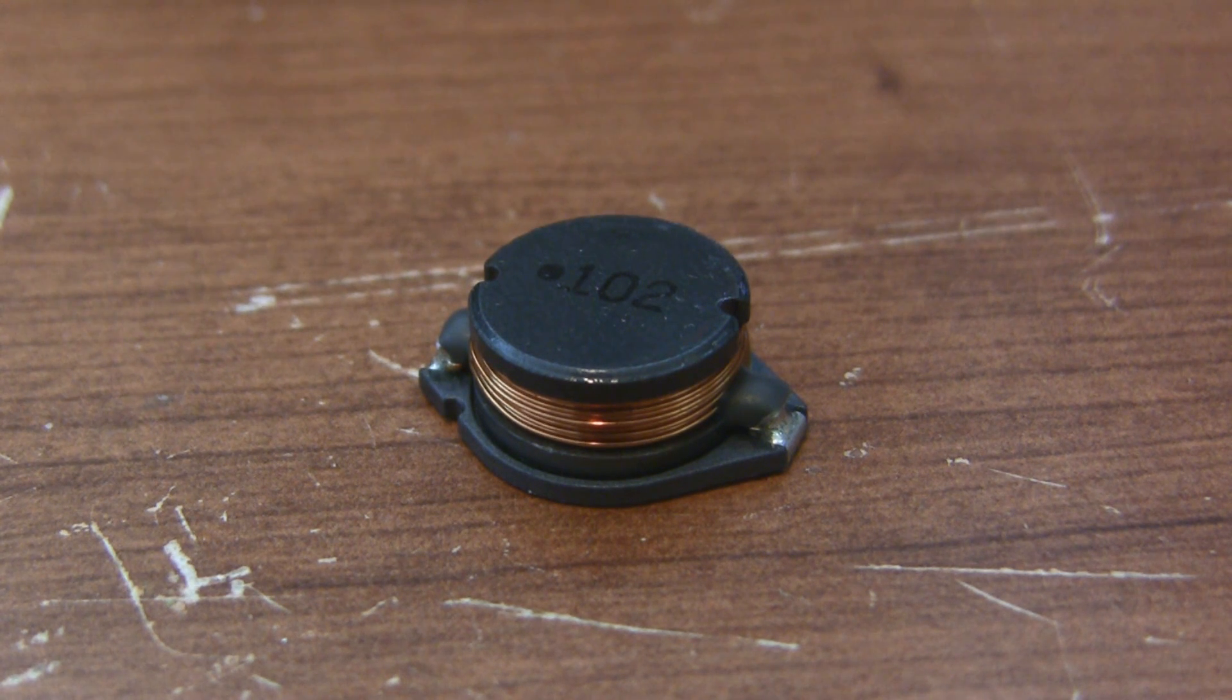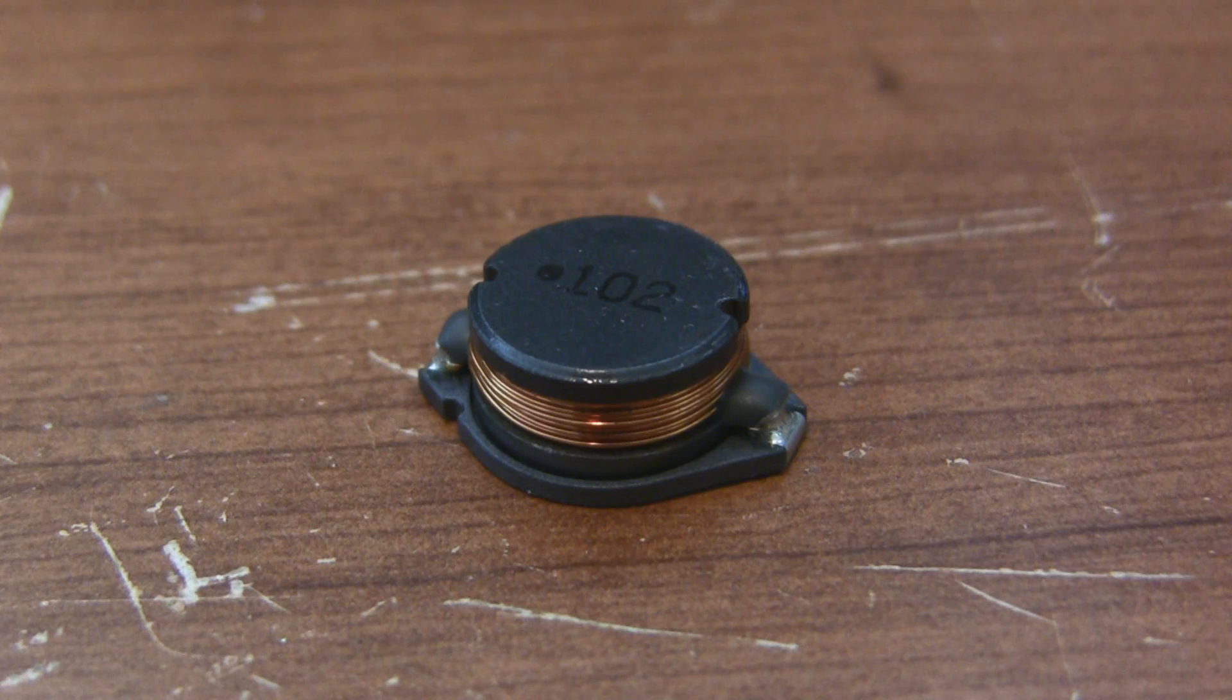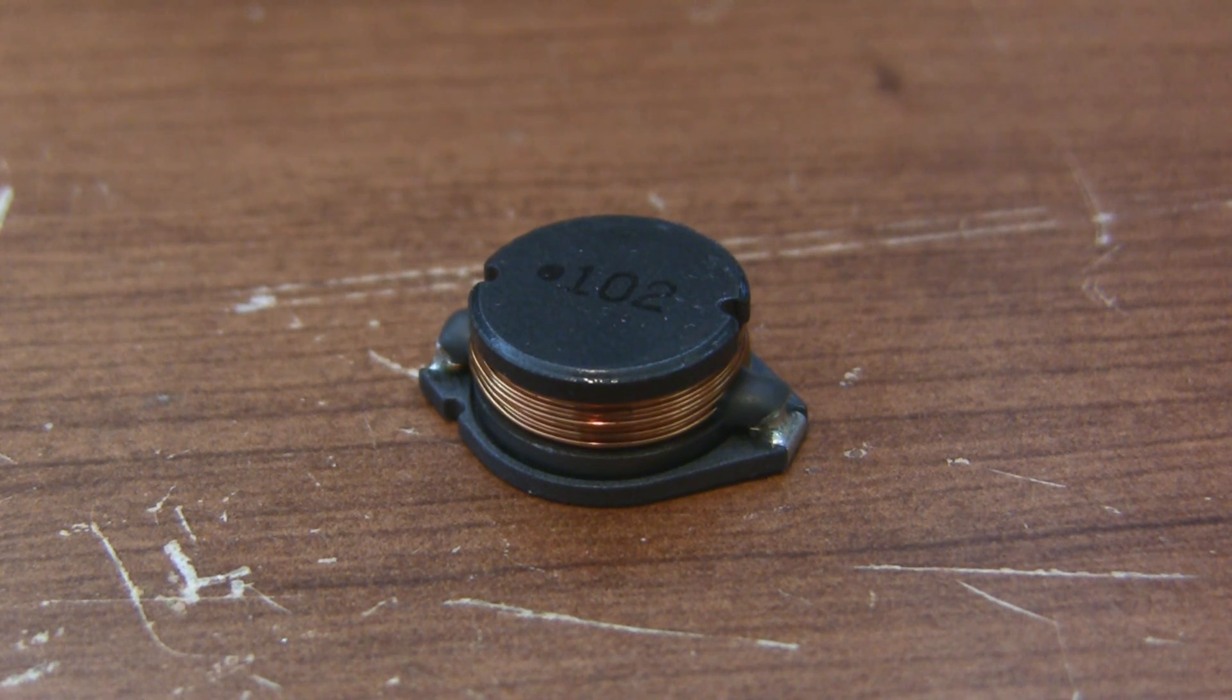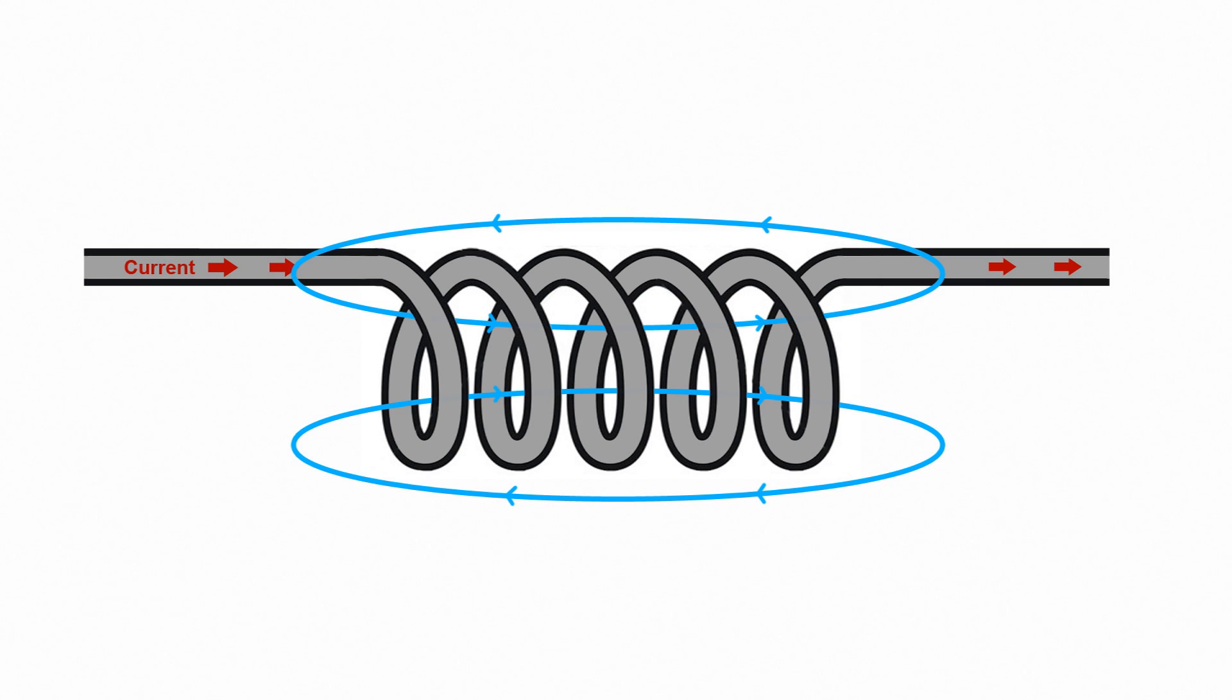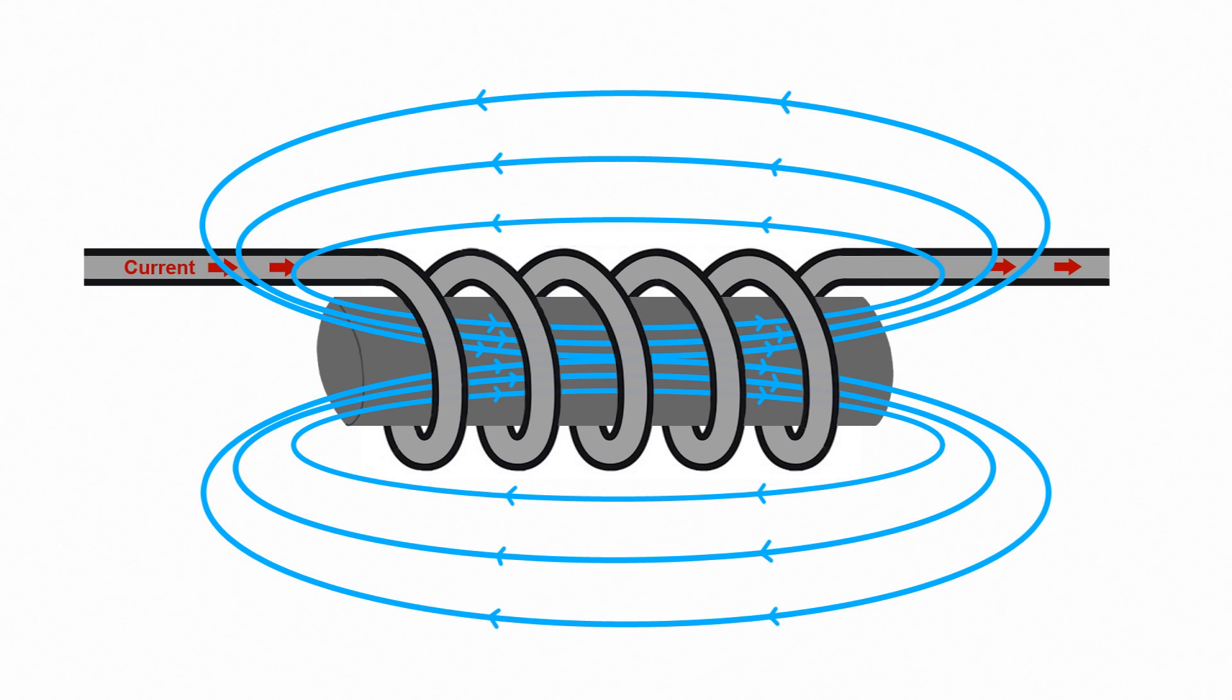Now you often see inductors made out of coils of wire wrapped around a ferromagnetic material like iron or ferrite. We call this the inductor's core. And what ferromagnetism means is that the core helps to enhance the magnetic field, which means you get more energy stored with the same coil for the same current.